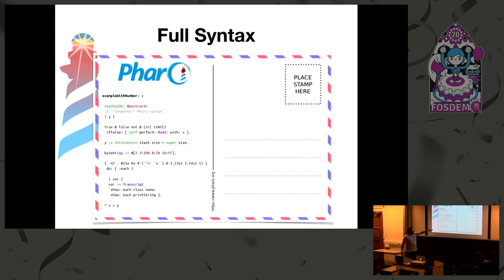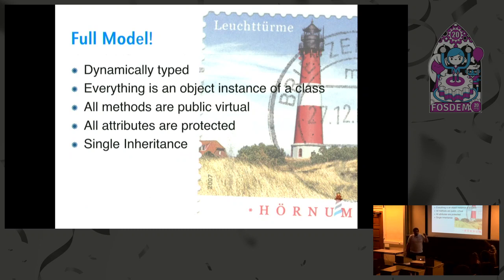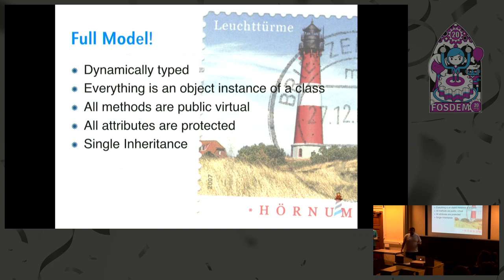It has a simple but powerful object model. This is the whole syntax of FARO — some details will not be visible, but this is it, the full syntax. We only have this. With this we have a pretty nice object model: a dynamically typed system where everything is an object, everything is an instance of a class, and classes are also objects. All methods are public — we don't have the idea of private methods. They are virtual, so automatically executable from subclasses, and we can override without caring at all. All attributes are protected, and we use single inheritance — with a small asterisk I will talk about later.